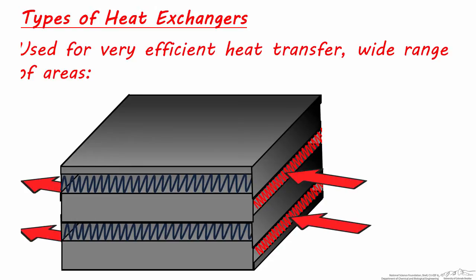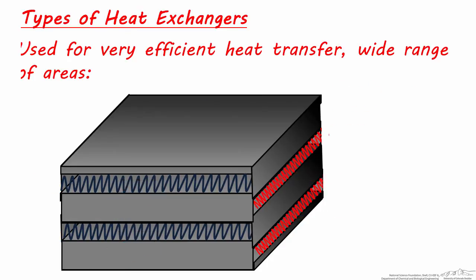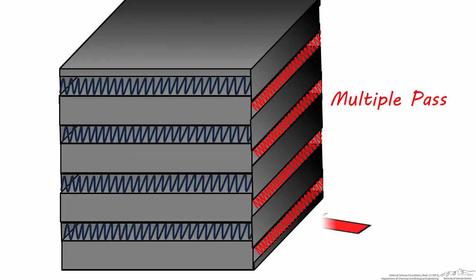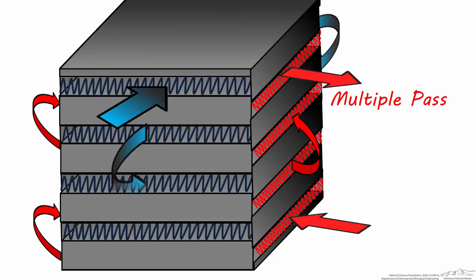One fluid moves through one side of the heat exchanger to the other, flowing through every other finned space, either single or multiple pass, while the other fluid moves through the orthogonal spaces, again either single or multiple pass. This is a representation of single pass flow, while multiple pass flow involves each stream weaving through every other channel. Here the hot stream flows through every other space and exits at the top, while the cold stream flows through the remaining spaces and exits at the bottom.